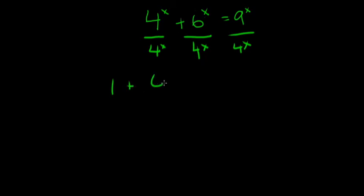And then we have 6 over 4 to the x. We note that 6 over 4 simplifies to 3 halves, so I'm going to replace that. It becomes 3 halves to the x is equal to 9 fourths to the x power, and that's what we've simplified to.